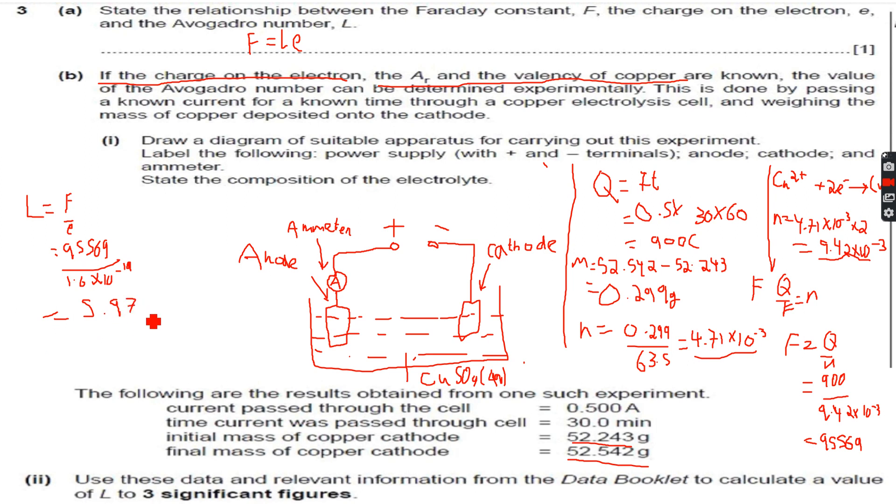This equals 5.97, to three significant figures, 5.97 into 10 to the power of 23. You can see that I've got a value that's not accurate but very close to 6.02.